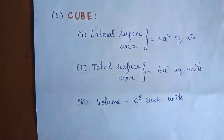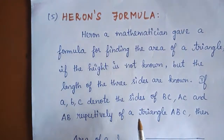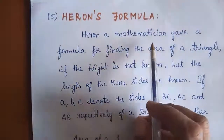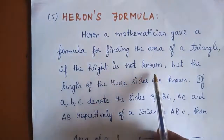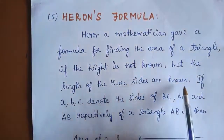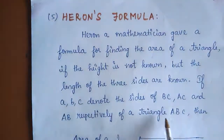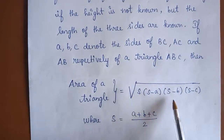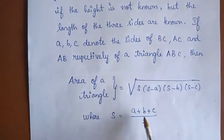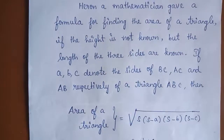Going back to Formula 2 — using the sides of a triangle to find the area — this is Heron's formula. Heron was a mathematician who gave a formula for finding the area of a triangle when the height is not known but the lengths of the three sides A, B, C are known. Area of a triangle is equal to root of S into (S minus A) into (S minus B) into (S minus C), where S is equal to (A plus B plus C) divided by 2. This formula is only used when the sides of the triangle are given.